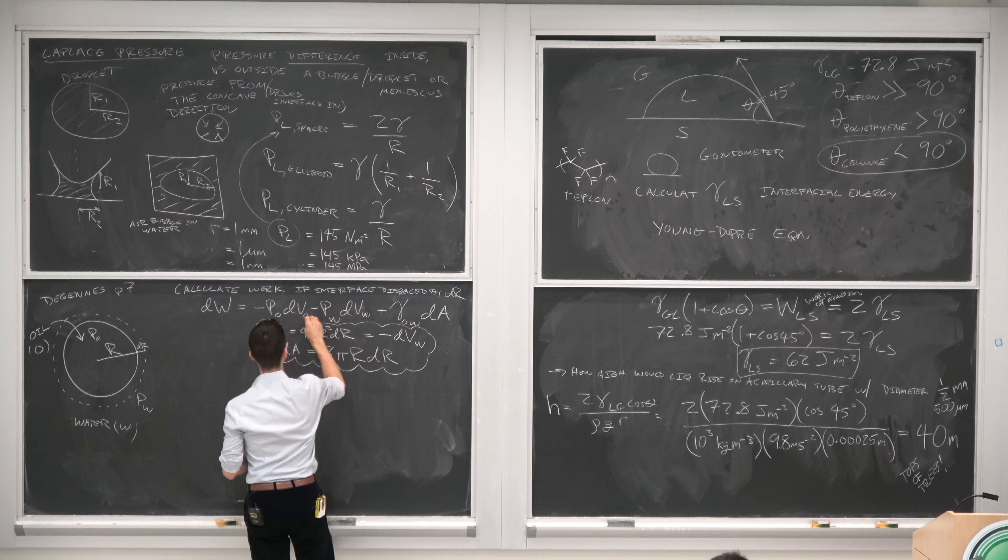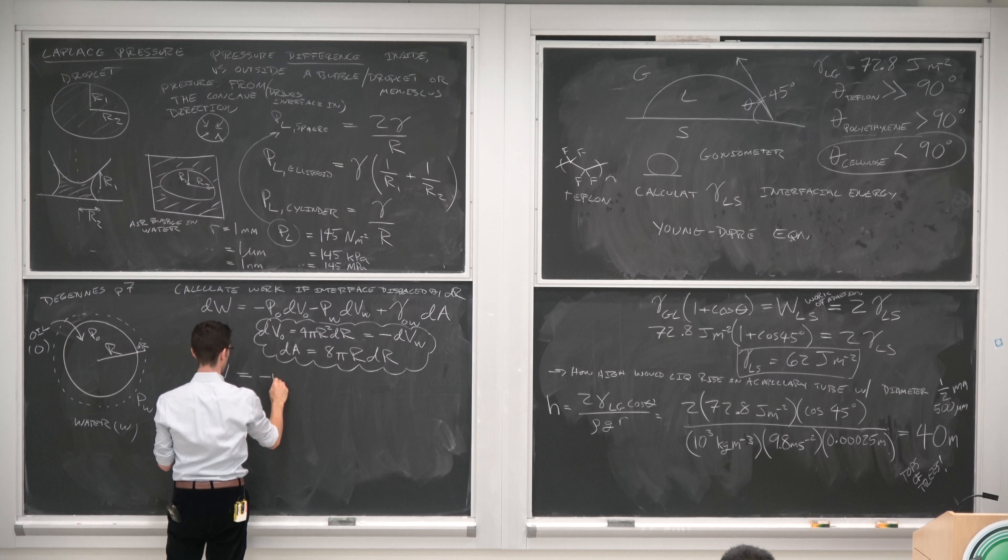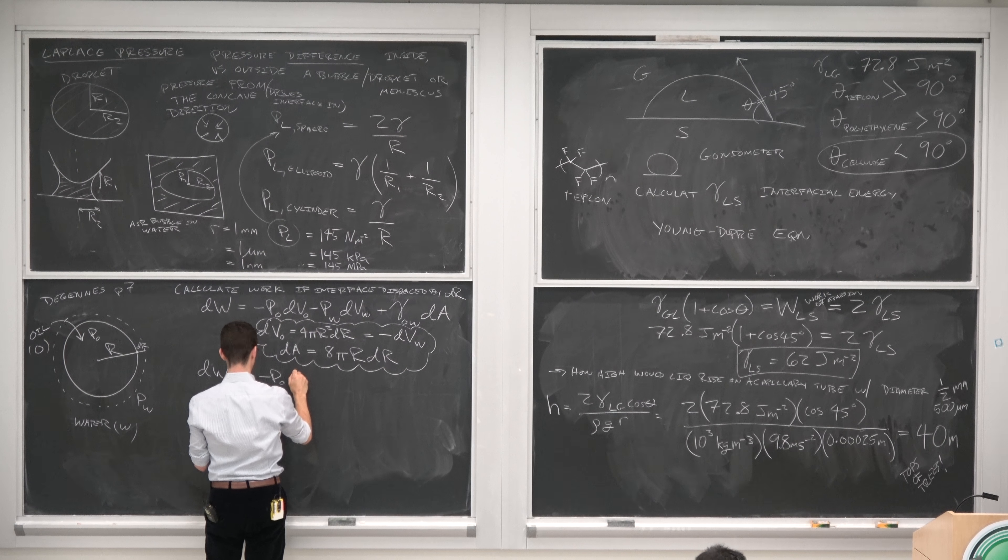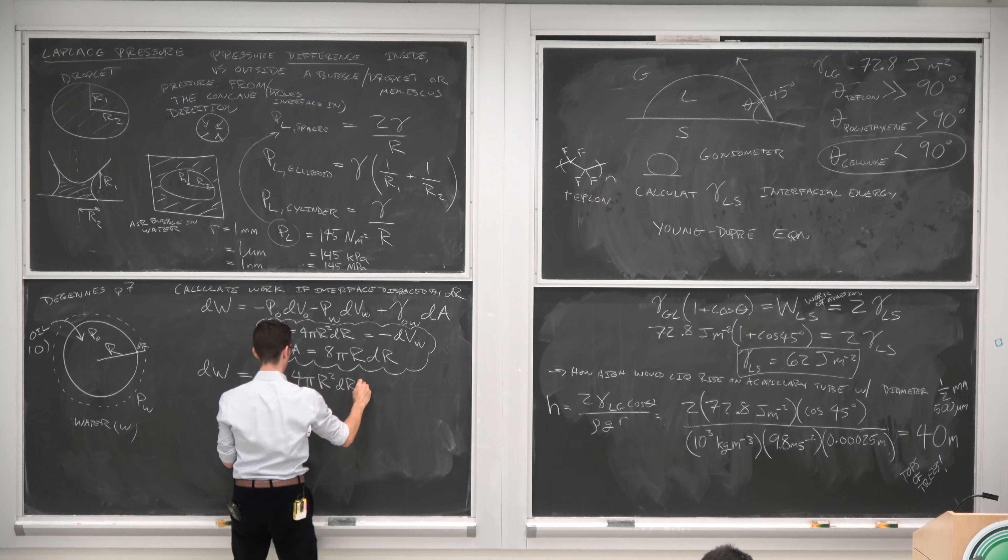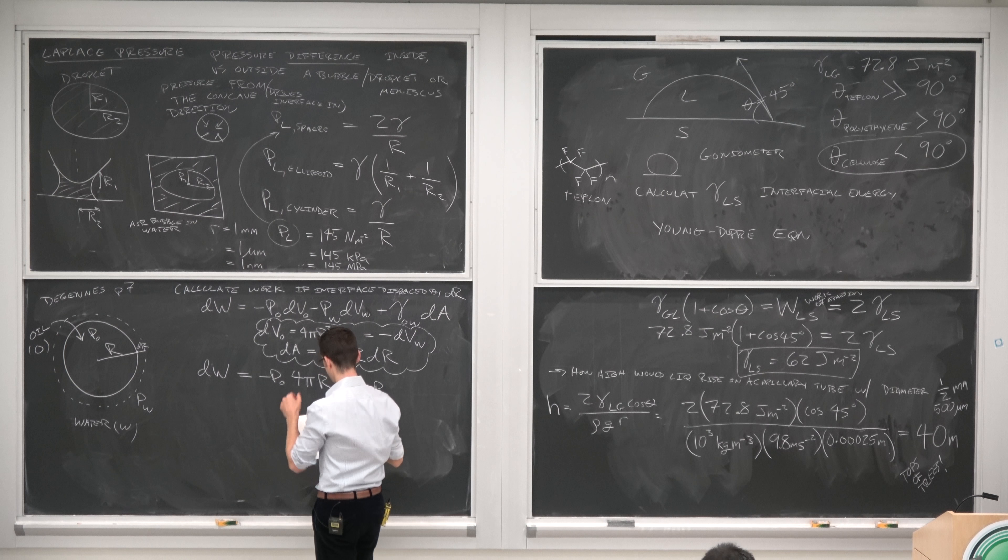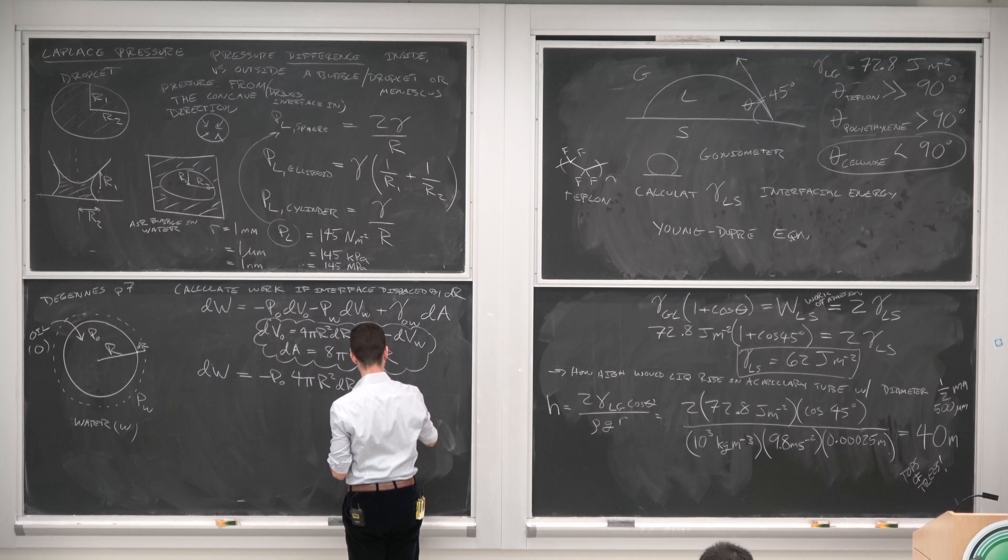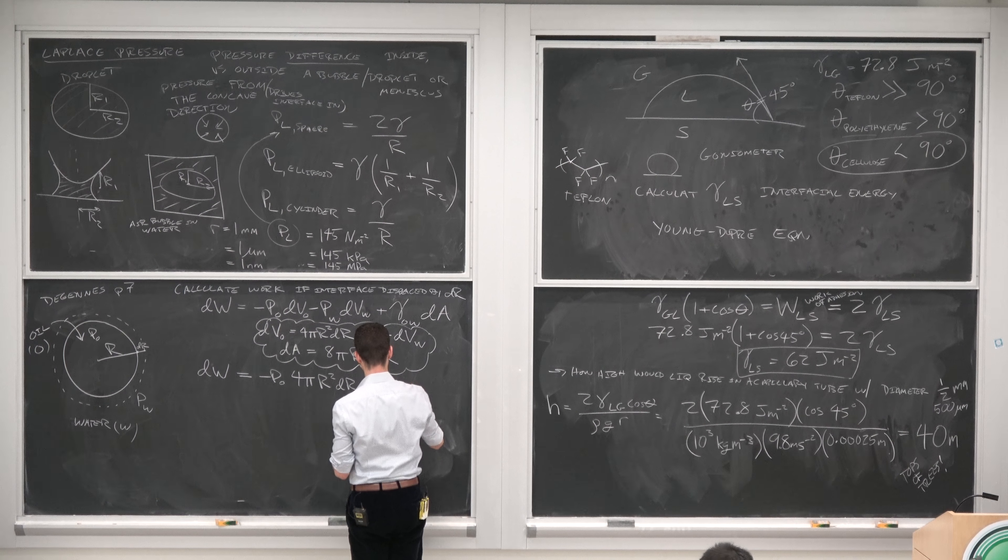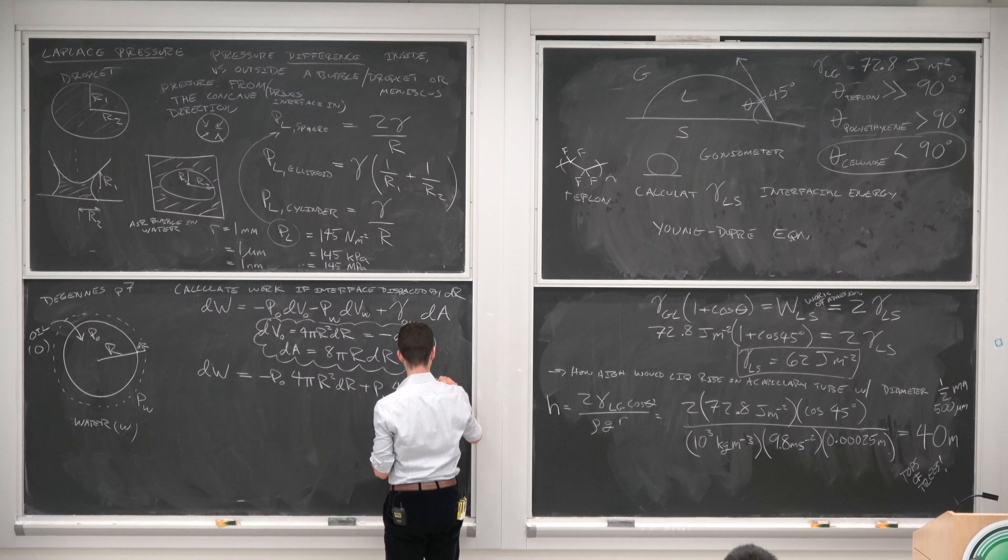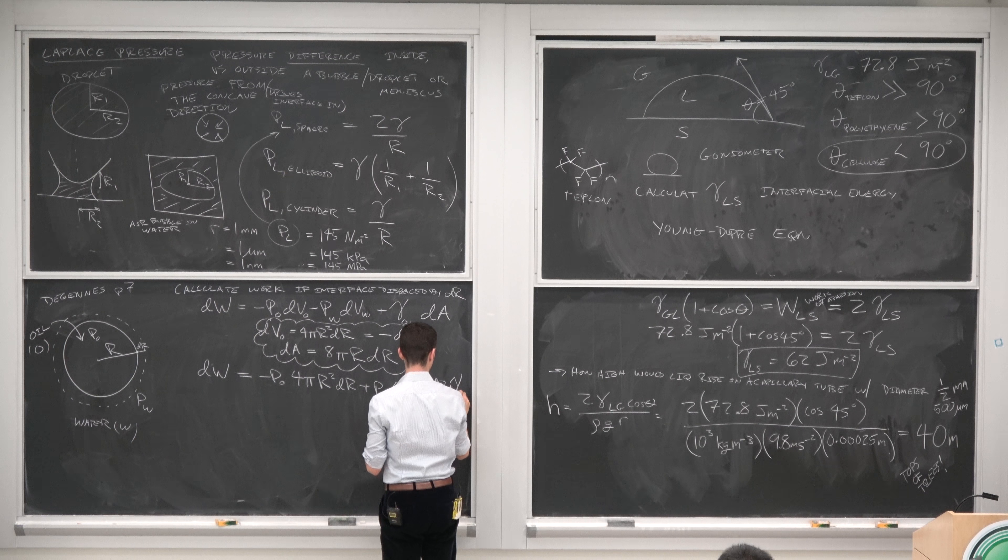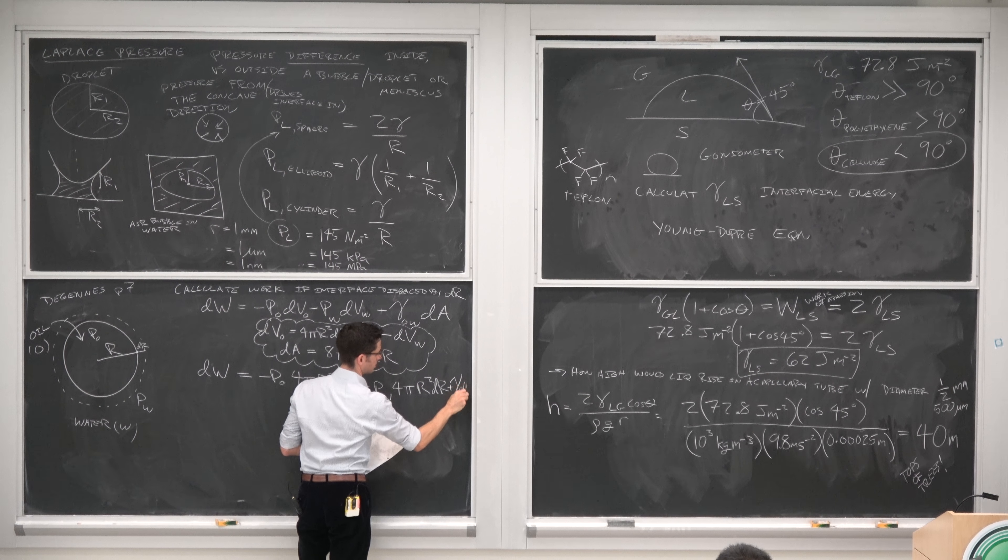So we'll use these substitutions, and we have dW equals minus P oil, the pressure in the oil, times 4 pi R squared dR plus P W, 4 pi R squared dR, plus gamma oil-water dA.